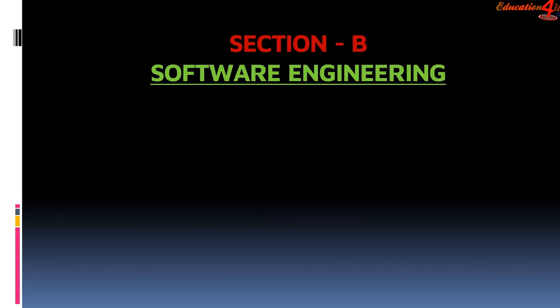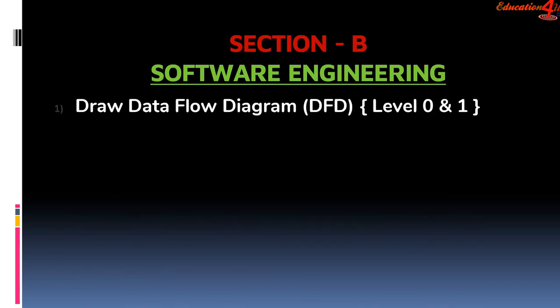Section B consists of questions of software engineering. In the section B, you will be given some set of instructions or examples on which software needs to be developed. For the same set of instructions, you need to draw data flow diagram that is DFD. DFD, you will be asked for only level 0 and 1.